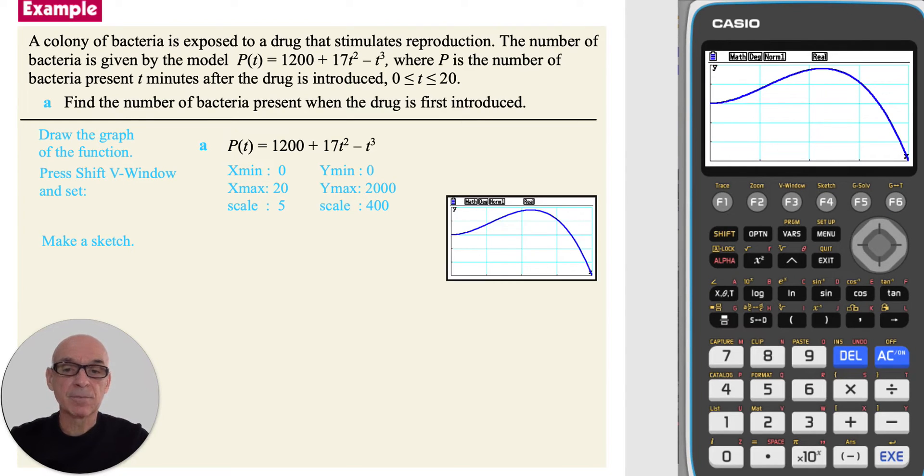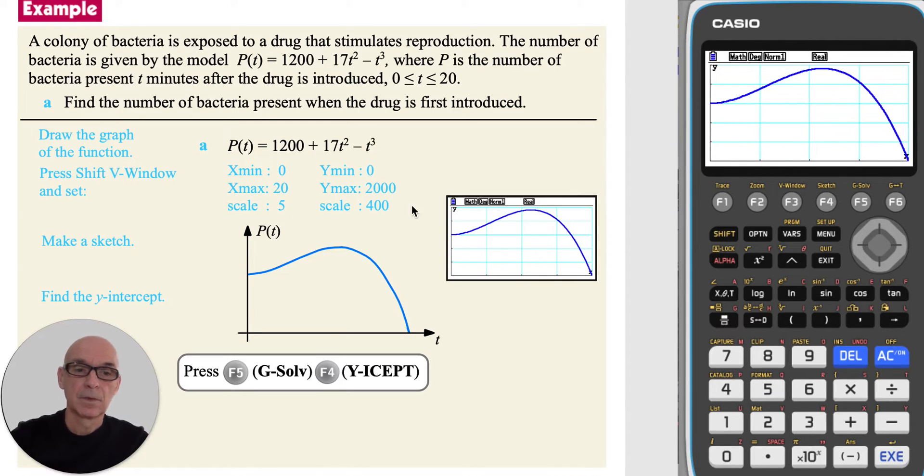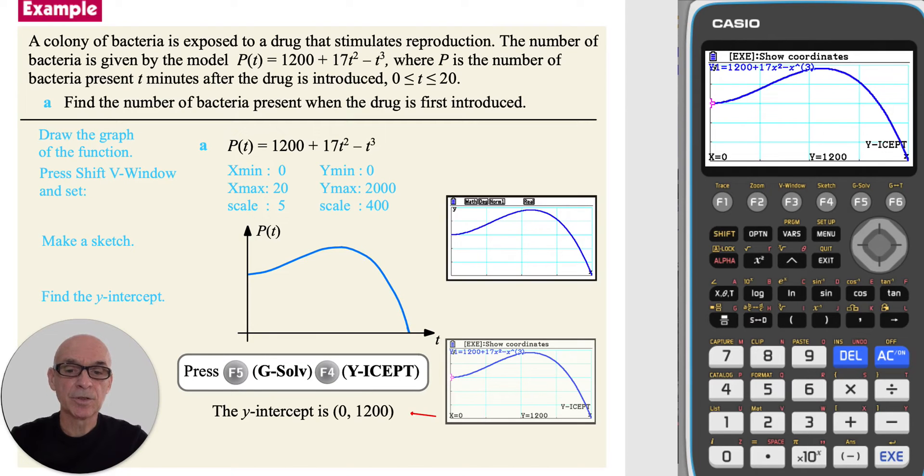Pressing f6 to draw the graph of the function. It's important to make a sketch of the graph. To find the y-intercept, press f5, gsolve, and then f4, y-intercept, giving the coordinates shown. So the number of bacteria present when the drug is first introduced is 1200.